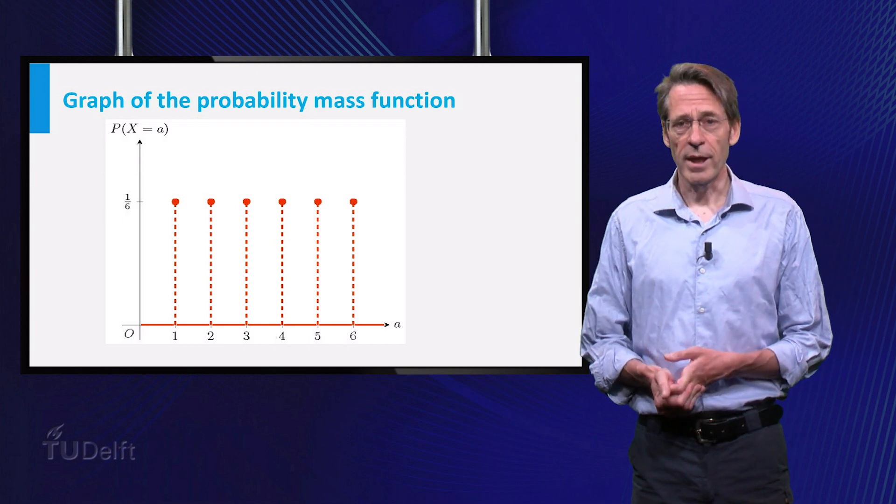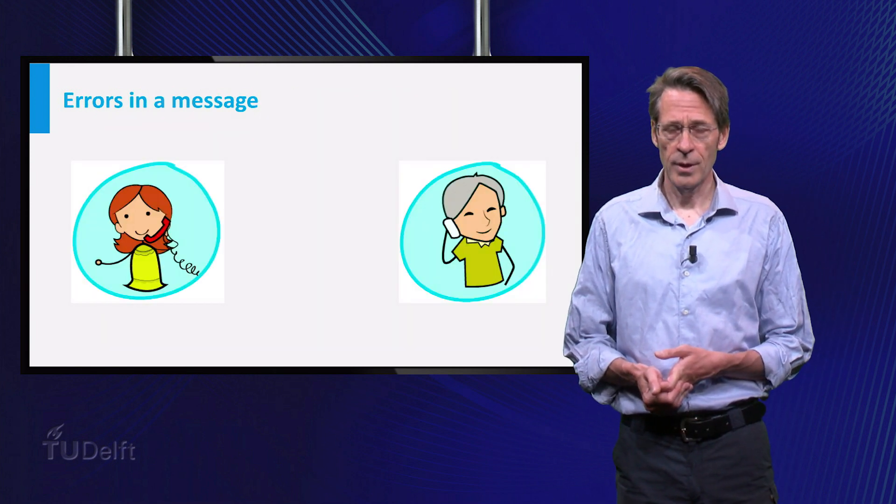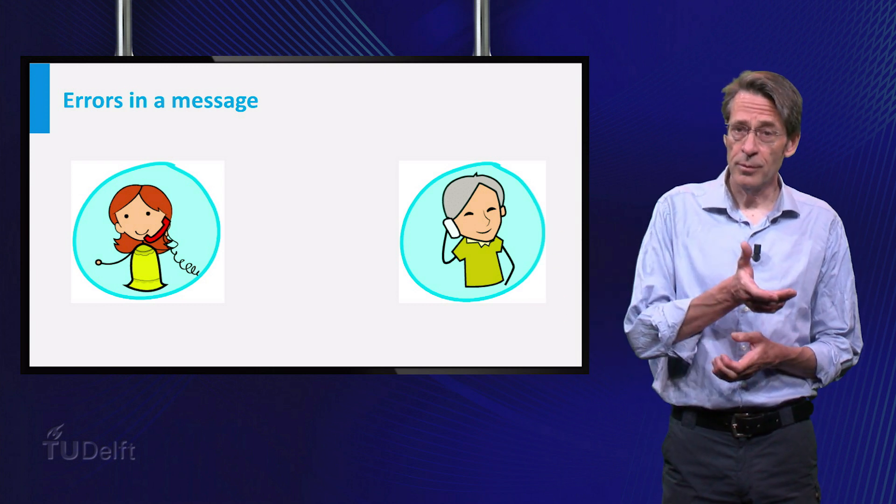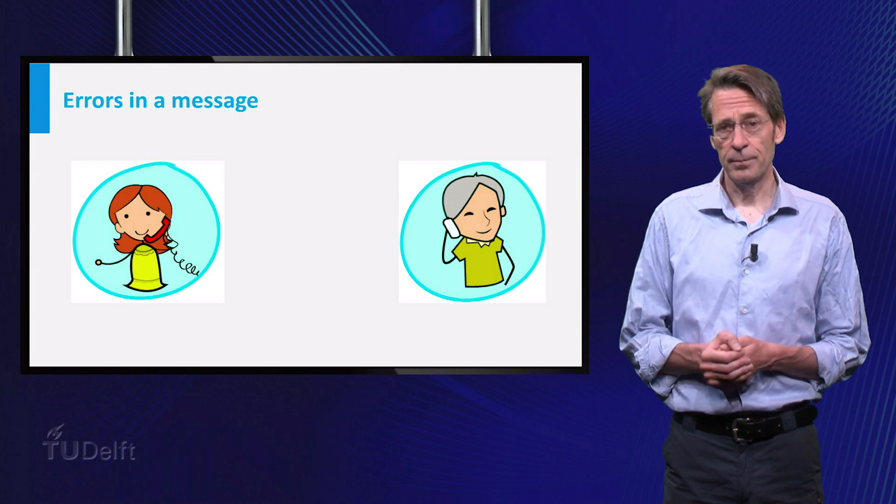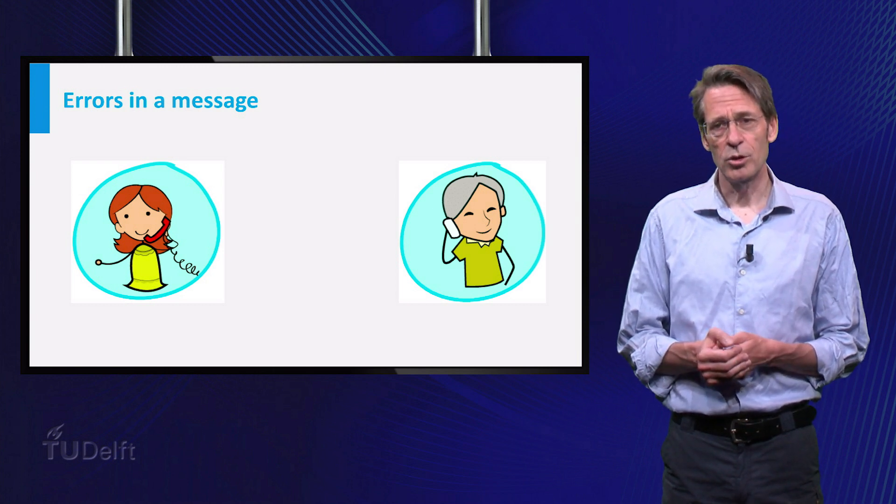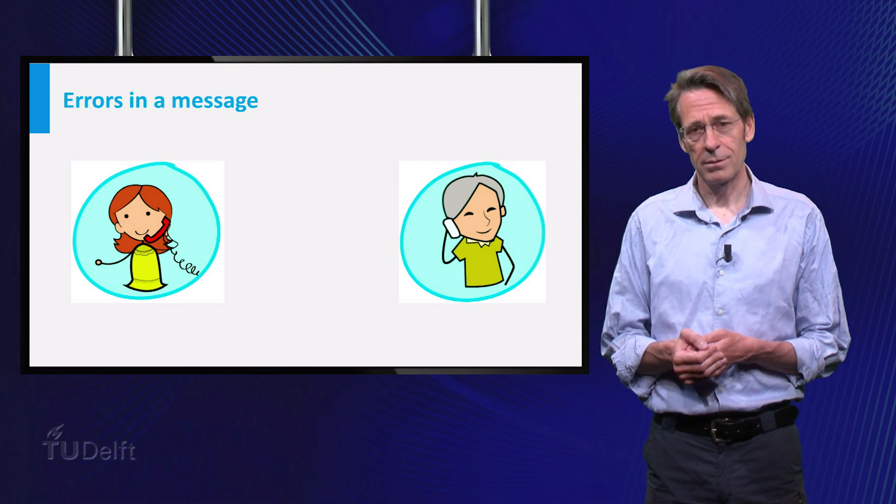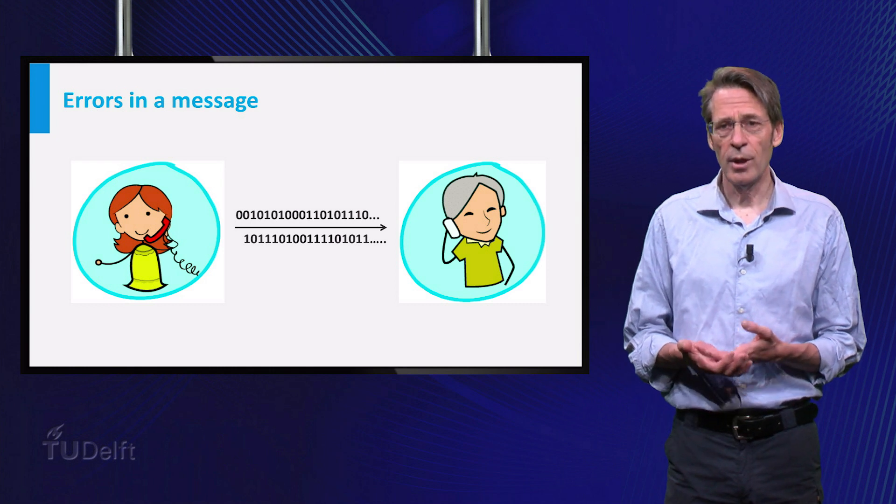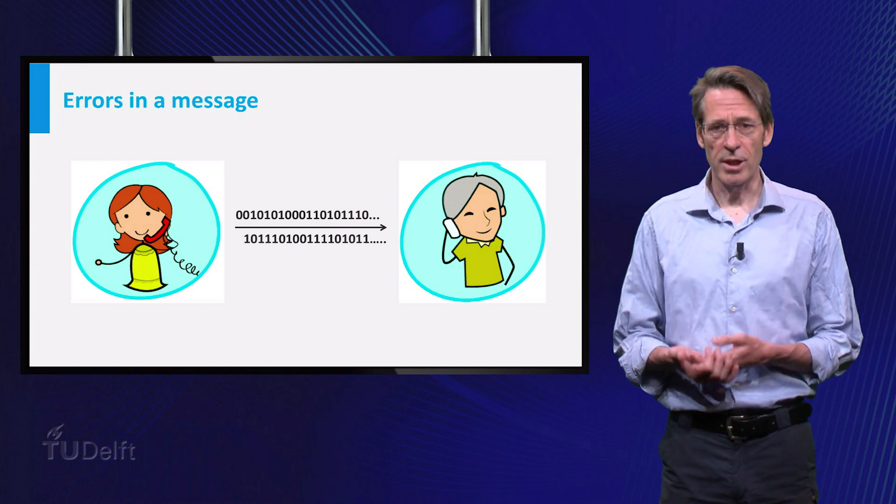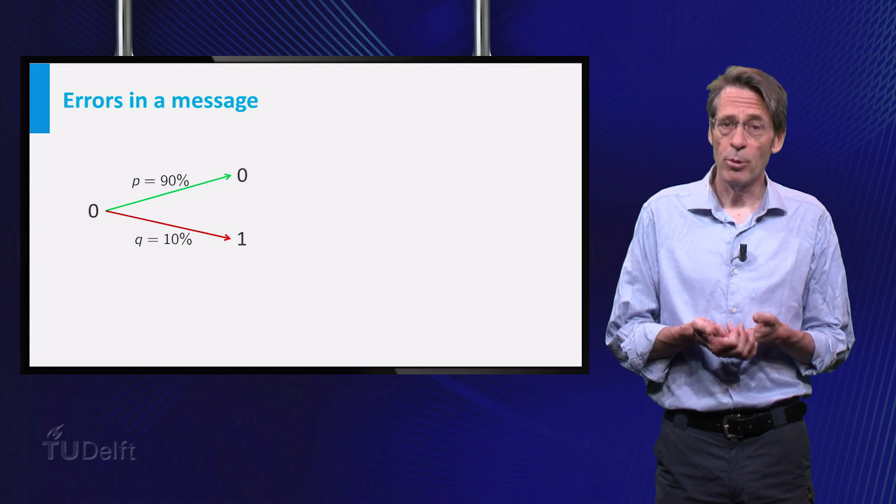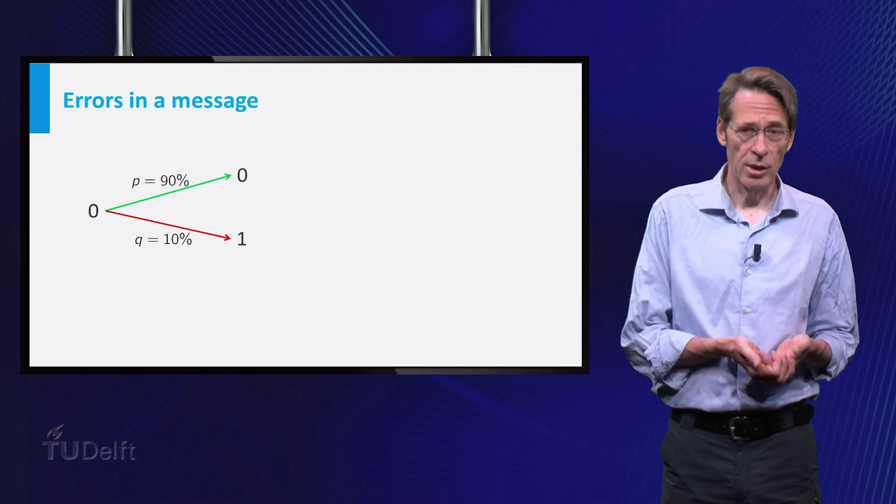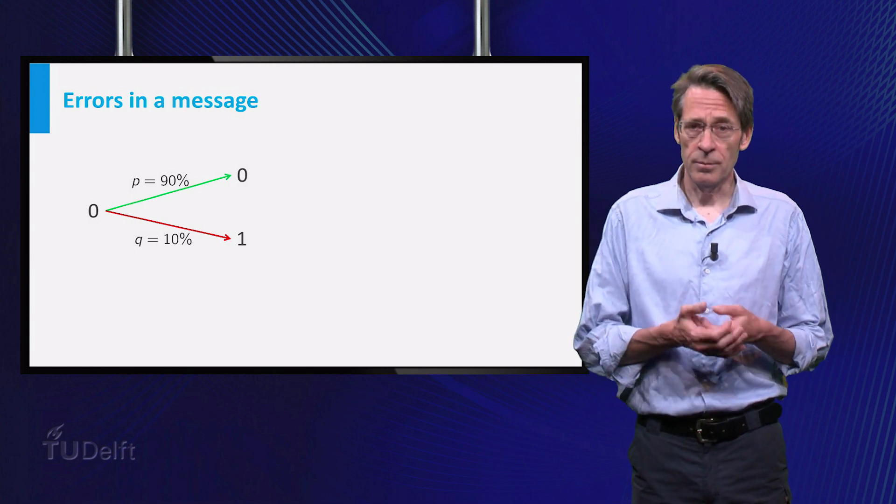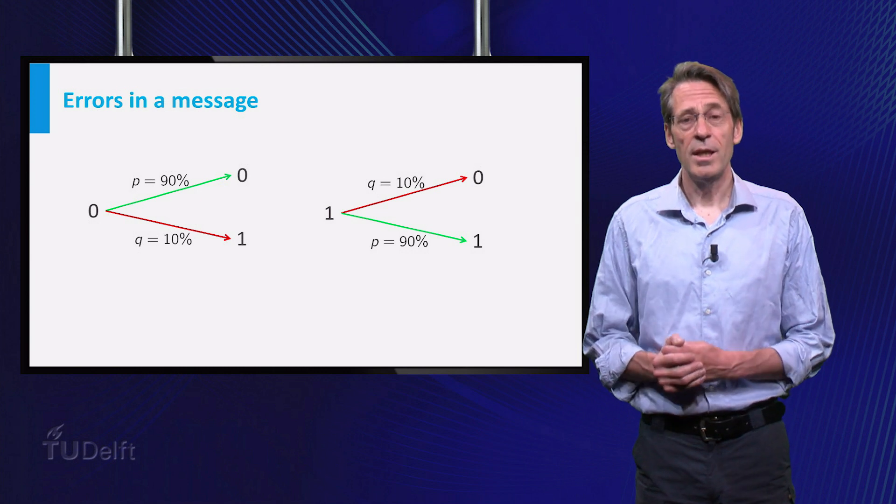Now let's look at a slightly more complicated example. Suppose messages are transferred from a sender to a receiver, and during the transfer errors may occur. To keep matters simple, suppose that the messages are sequences of bits, that is 0's and 1's. And suppose that errors occur with a probability of 10 percent. So if a bit 0 is sent, the probability that it is received as 0 equals 0.9, and with probability 0.1 it is received as a 1, likewise if a 1 is sent.